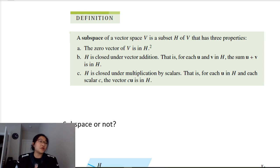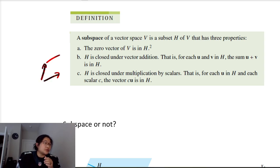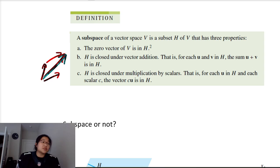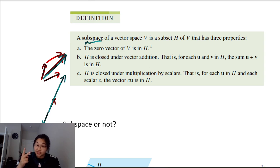A subspace is a subset H of a vector space V that has three properties: first, the zero vector is contained in H; second, H is closed under addition — for any vectors u and v, their sum is still in H; and third, H is closed under scalar multiplication — any scalar multiple of a vector in H remains in H.